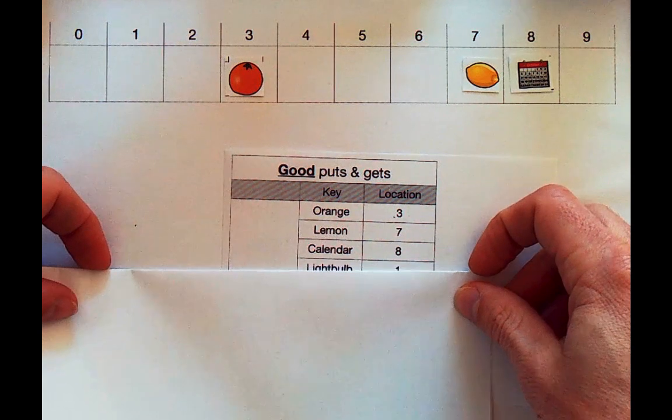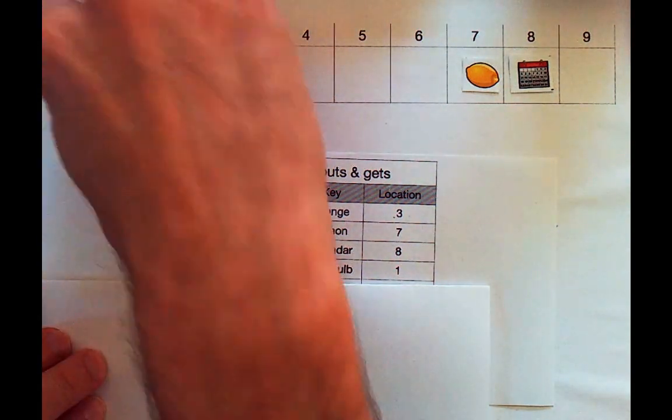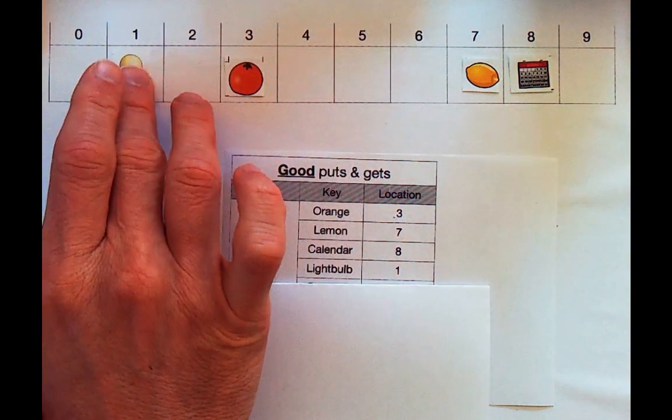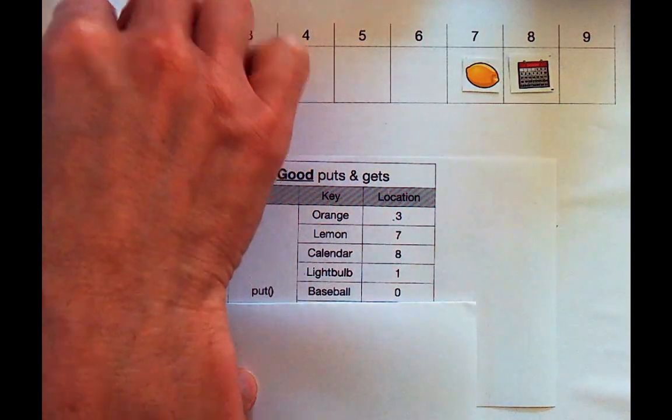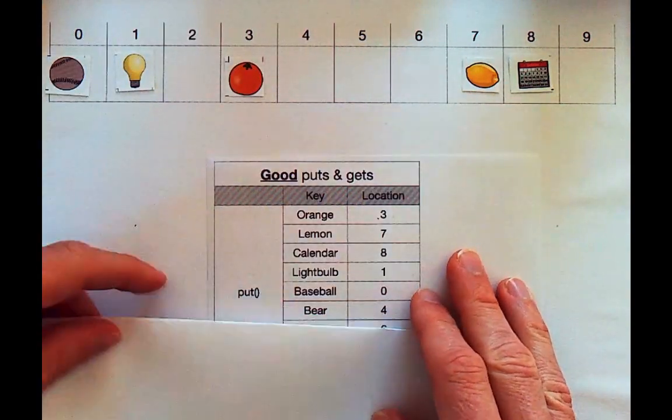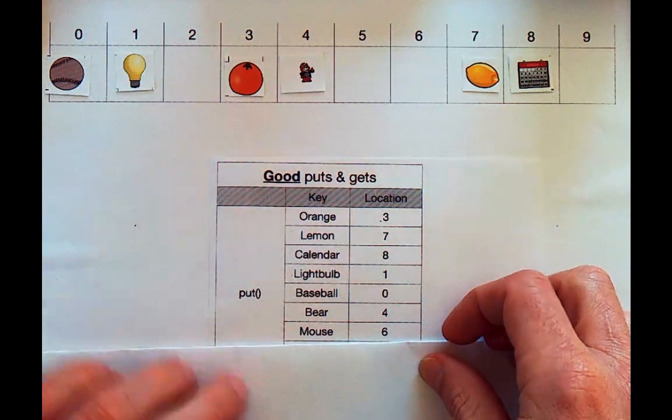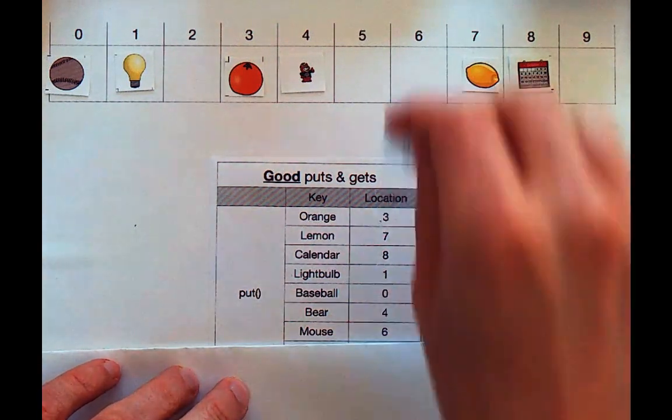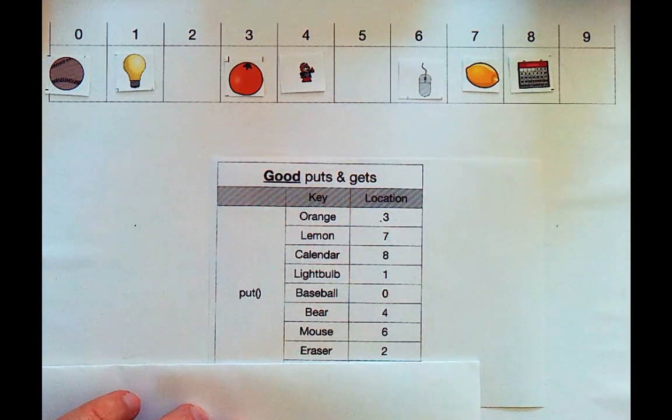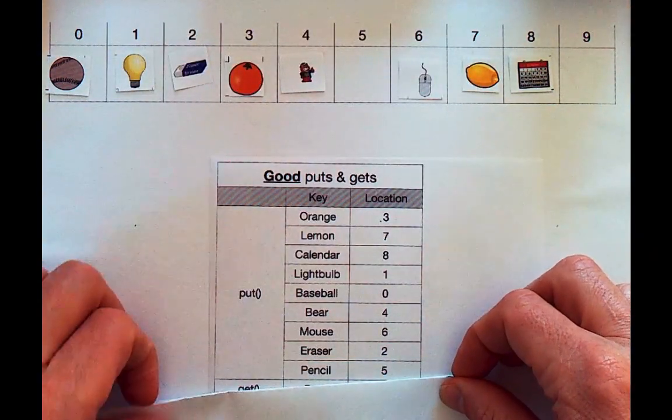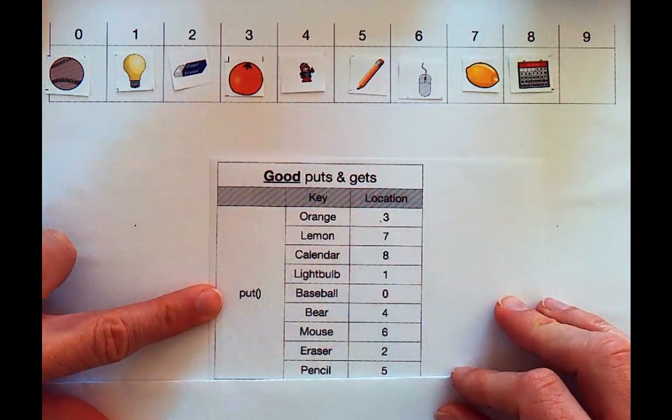So we're going to put a light bulb and it belongs in box 1. And baseballs apparently go in box 0. And let's go ahead and add a couple more. So we'll put a bear in there. And bears apparently go in box 4. And mouse goes in box 6. So we'll go ahead and add a mouse in box 6. And erasers go in box 2. So we'll put an eraser in box 2. And pencils go in box 5. So we'll go ahead and put the pencil in box 5.